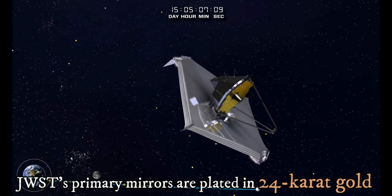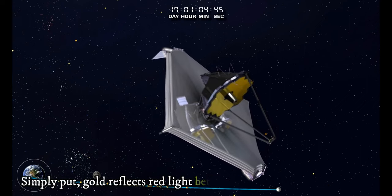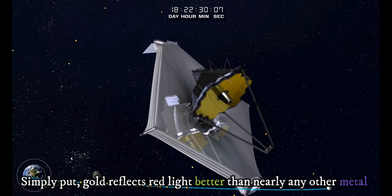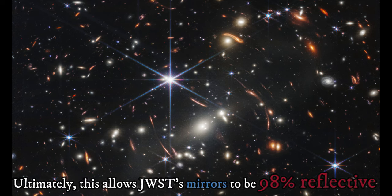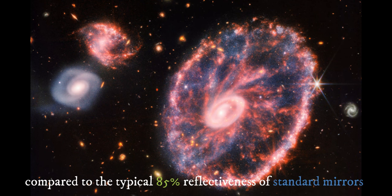Simply put, gold reflects red light better than nearly any other metal. Ultimately, this allows JWST's mirrors to be 98 percent reflective compared to the typical 85 percent reflectiveness of standard mirrors.